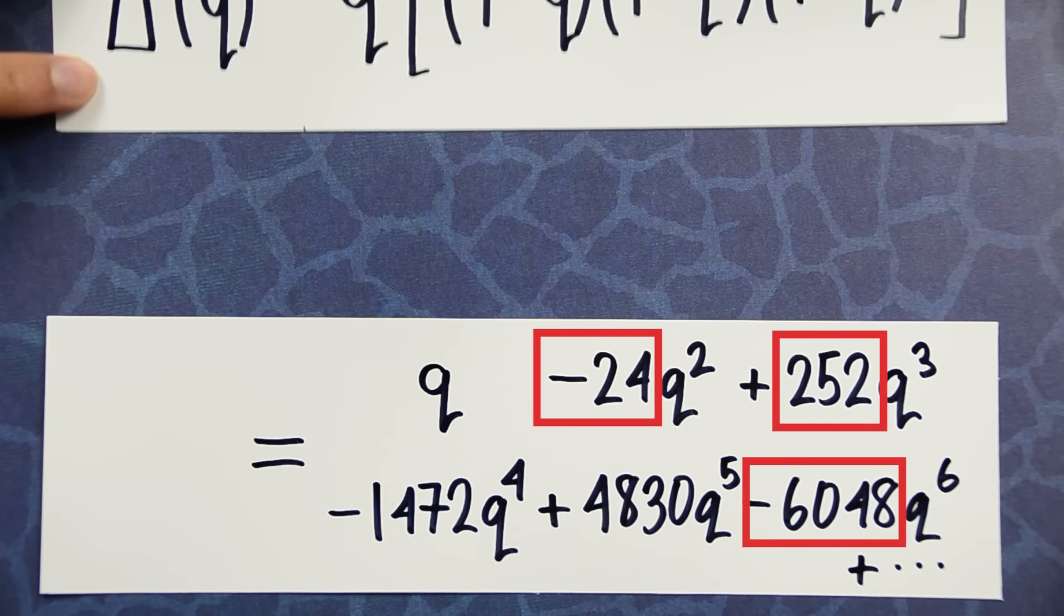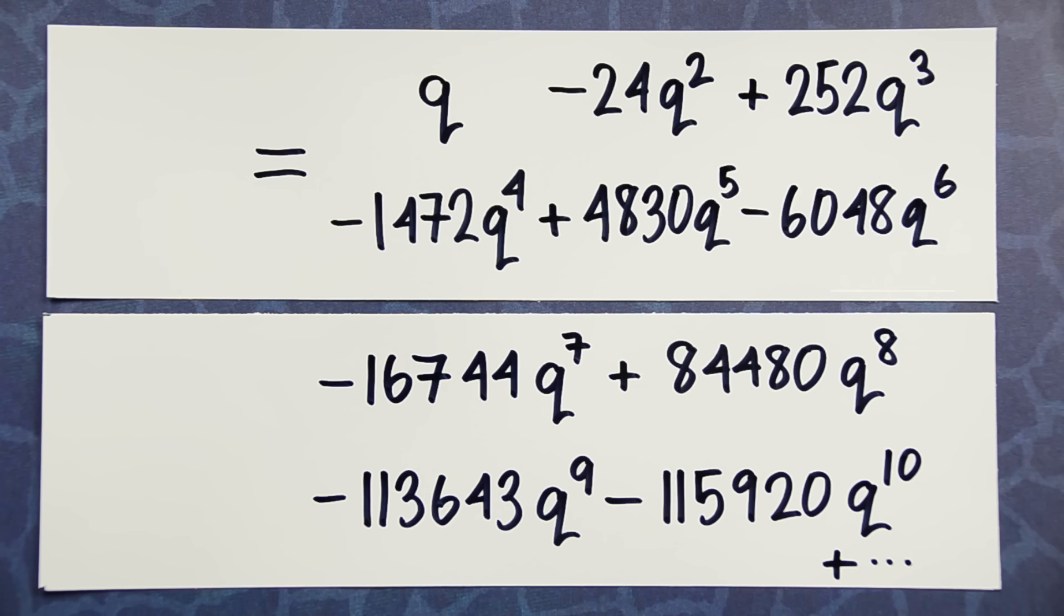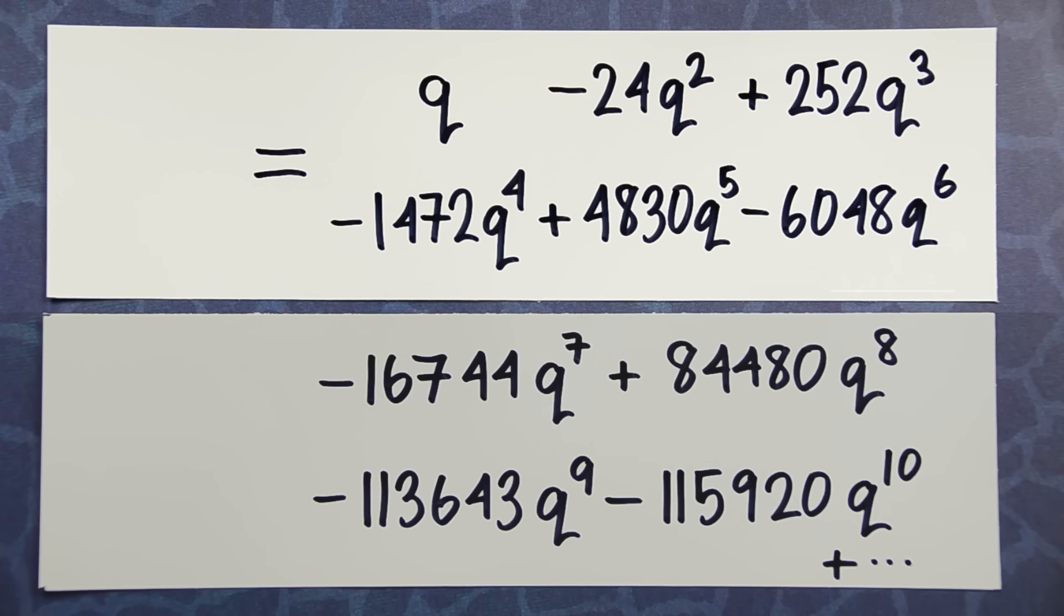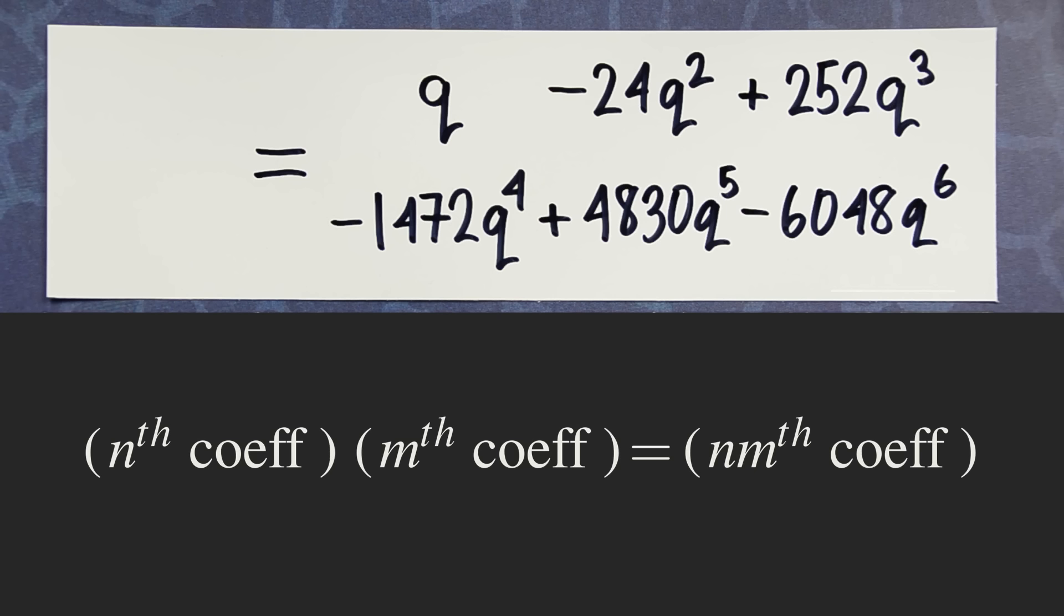Another observation: if you wrote out some more coefficients and you took this number times this number, it equaled this number. In other words, the coefficients of this function were multiplicative. The nth coefficient times the mth coefficient equals the n×mth coefficient, whenever n and m were coprime.